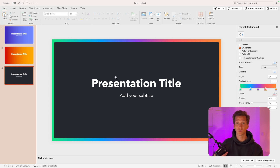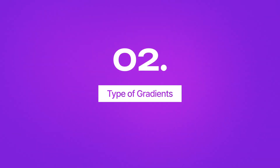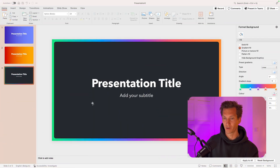Colors are just one thing — there's also another important aspect, which is the type of gradient. There are multiple types of gradient that we could use to change the entire design and look and feel. Let's jump into PowerPoint and have a look.